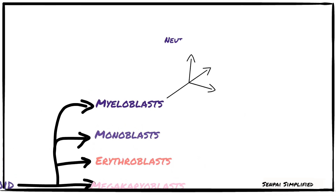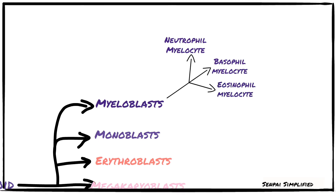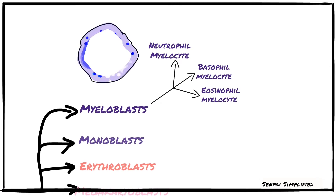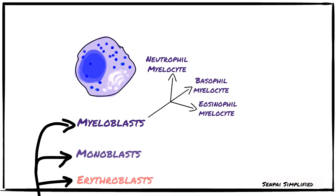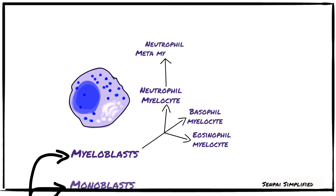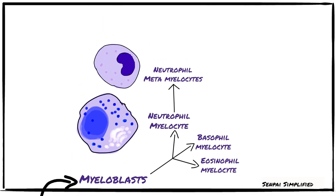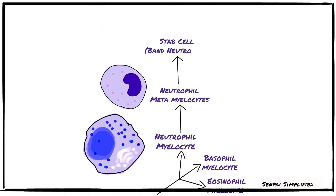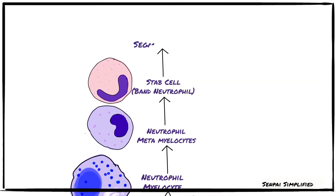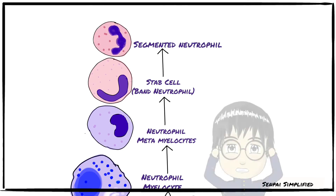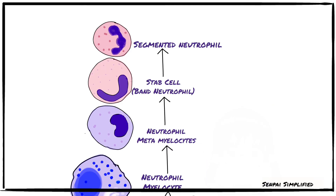Granulocyte precursors — myeloblasts — divide into neutrophil myelocytes, basophil myelocytes, and eosinophil myelocytes. Neutrophil myelocytes are large, have an eccentrically located nucleus, prominent Golgi apparatus, and prominent azurophilic granules. They further divide into neutrophil metamyelocytes, which have a smaller nucleus with an indentation and no visible azurophilic granules. The metamyelocytes develop into a stab cell, also known as a band neutrophil, identified by a highly segmented nucleus.